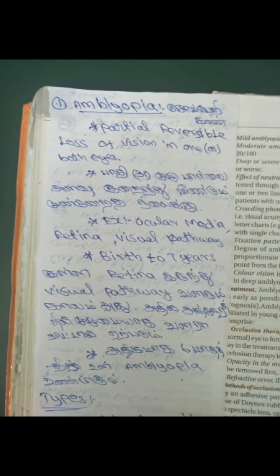Amblyopia is the topic. We are going to go over amblyopia. The bar is also a small one, but it is not a small one. Amblyopia is a somberic condition. Let's see how this bar is full. First, one example.